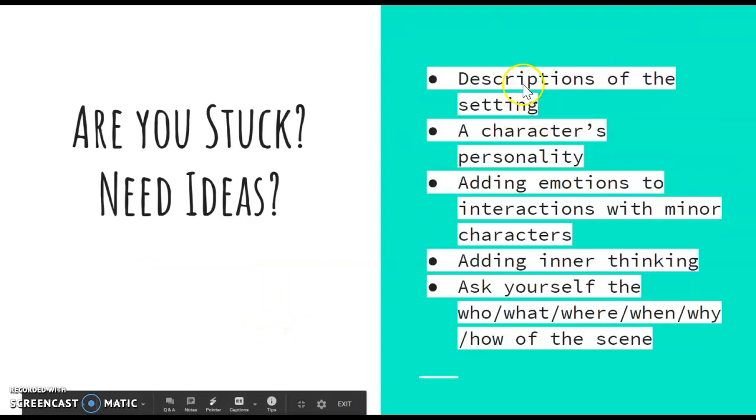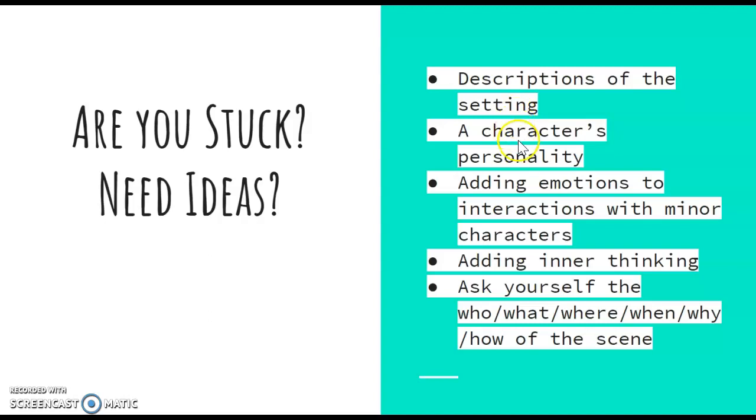If you're stuck, I want you to think about descriptions of the setting. Where did the story take place? How did it look? What did it look like? What about your character's personality? What about emotions or interactions with the other minor characters? How can you add inner thinking? Ask yourself those key questions, the who, what, where, when, why, and how of the scene?